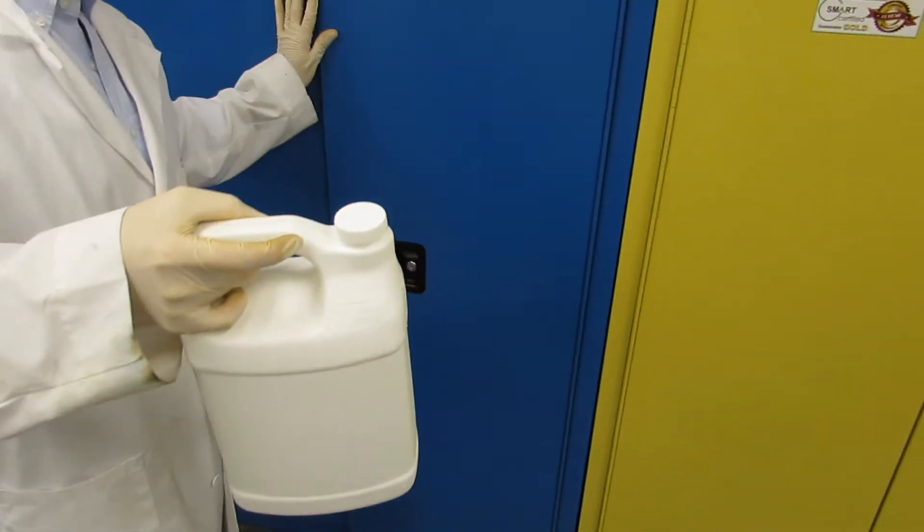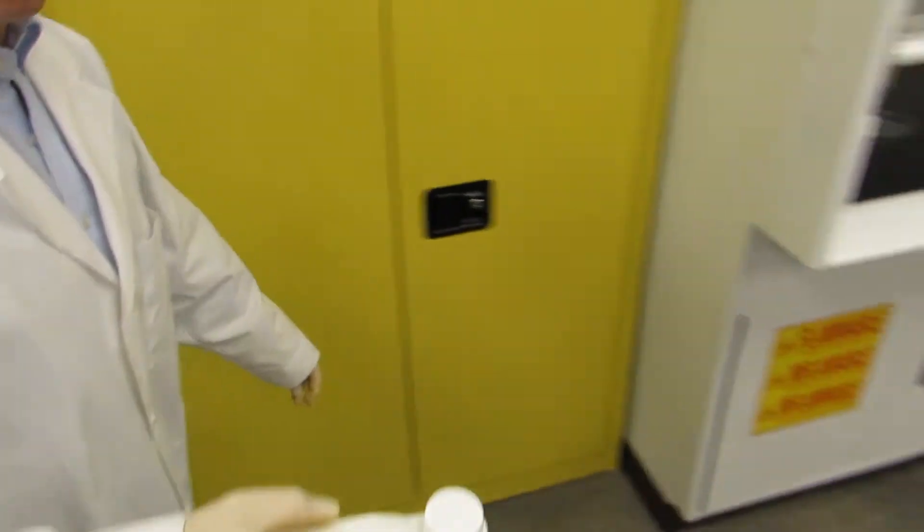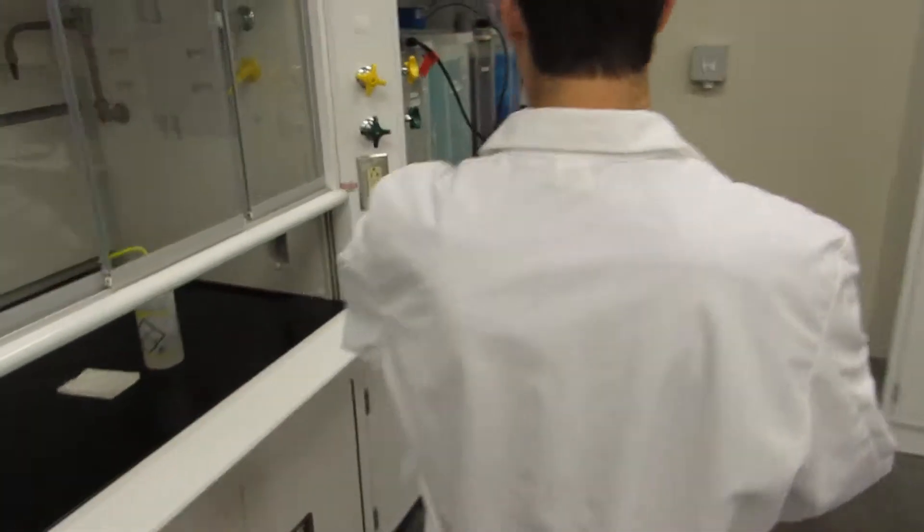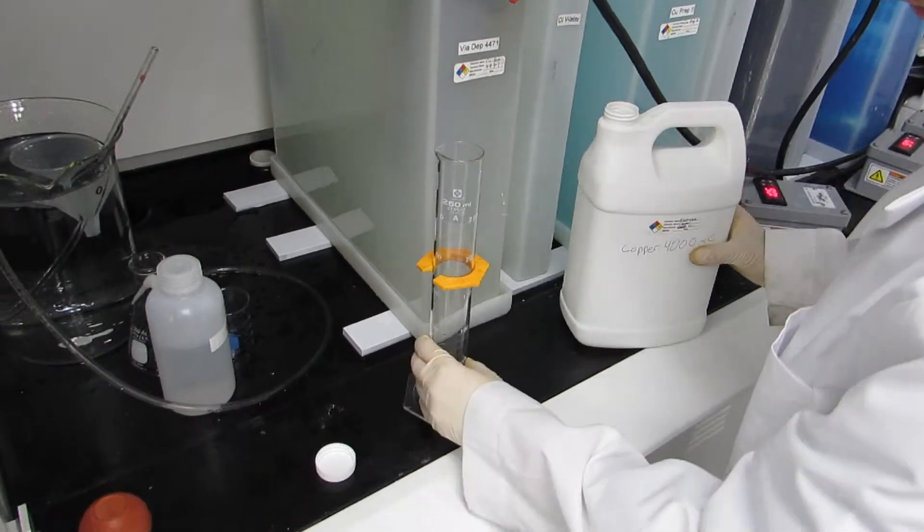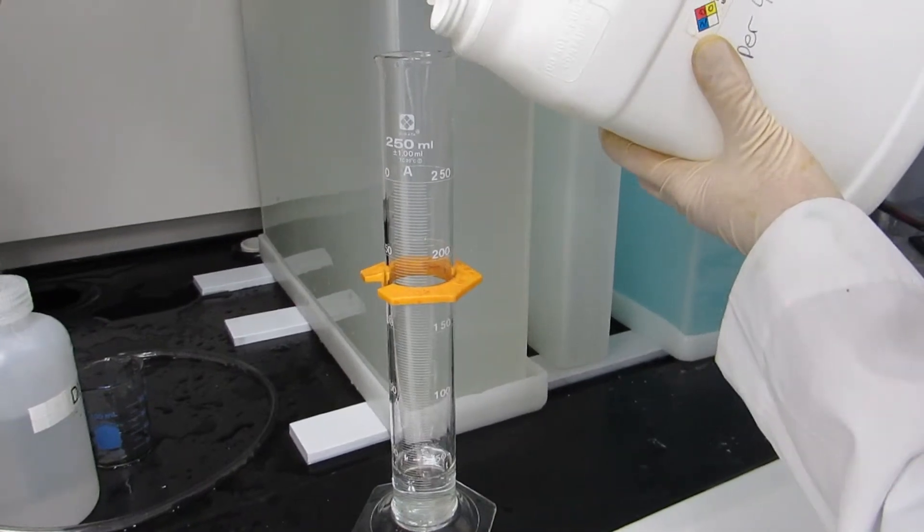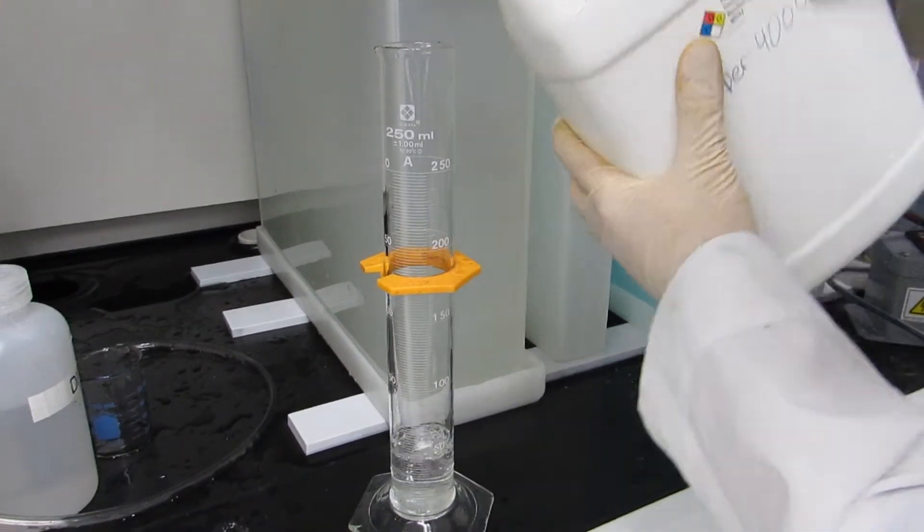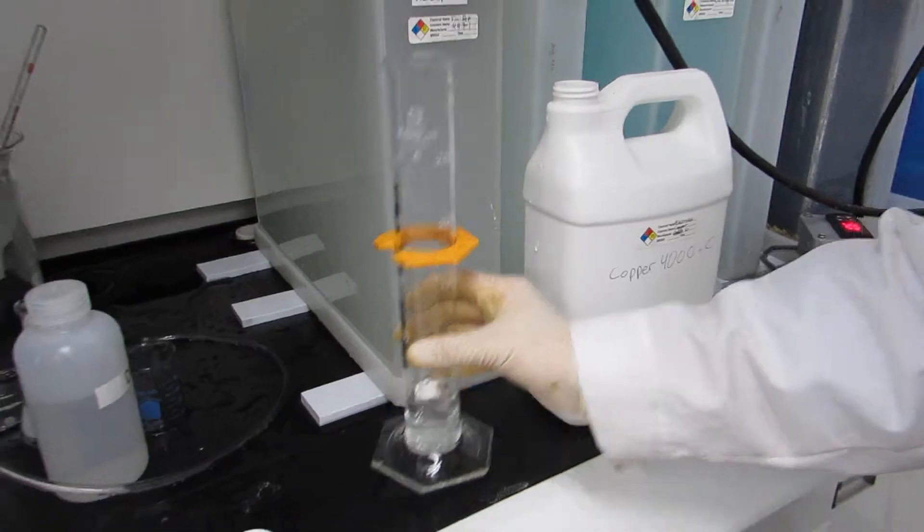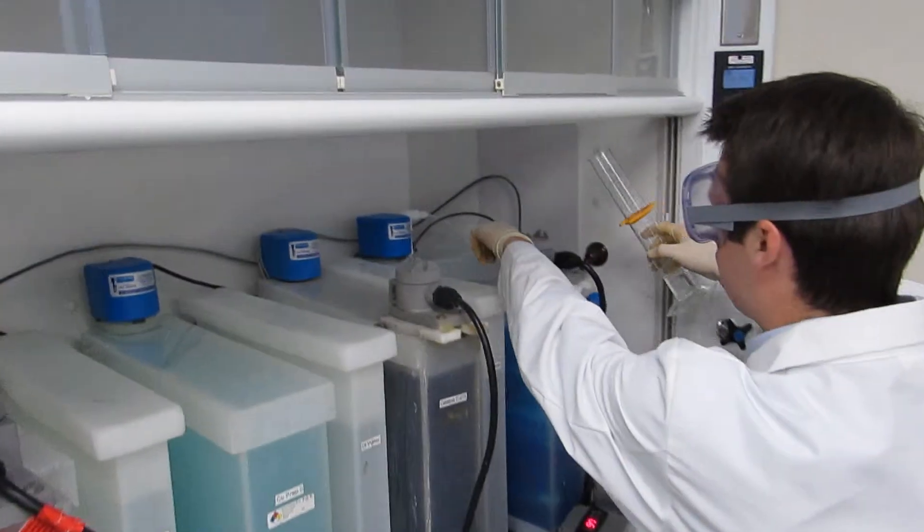Now we are going to add 46 milliliters of copper 4000C. There we go. Just dump it in straight to the solution again.